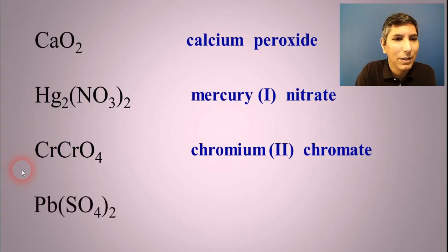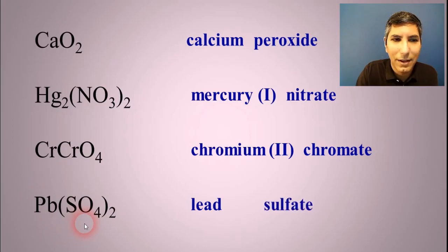And the last one, this one might be the toughest one of all of these. I'm not sure. Pb, of course, is lead. And then SO4 is sulfate. And we know lead needs a Roman numeral. What's the Roman numeral? Is it two?